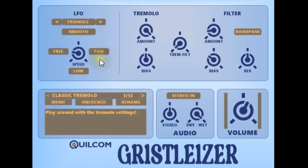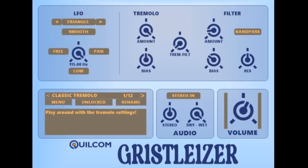You've got a pan option, which alternates the effect between left and right when turned on. The speed goes from 0.25 Hz up to 115 Hz, as per the original, but you can change that to a higher range, which goes from 10 up to 7 kHz.